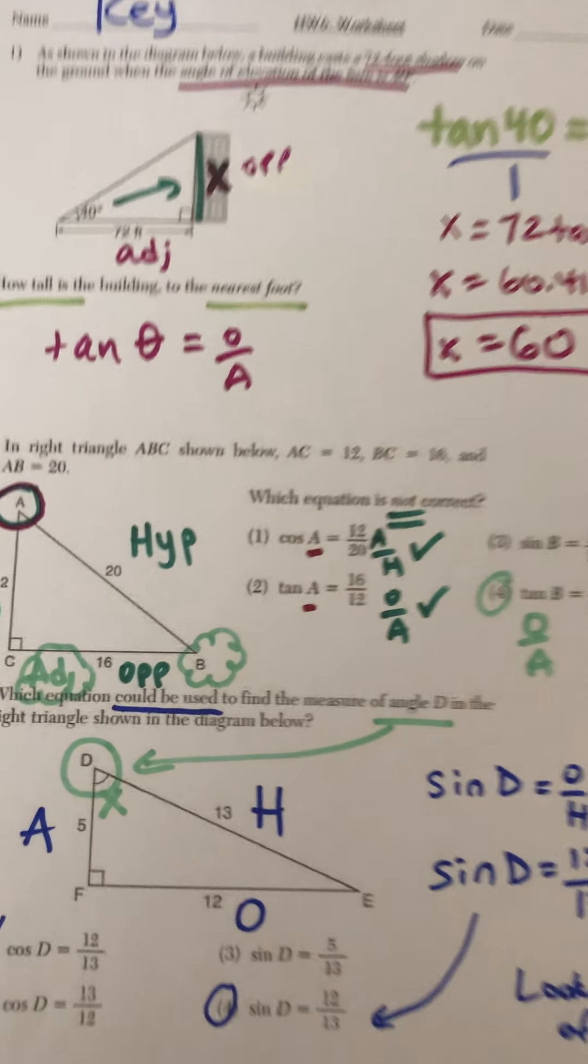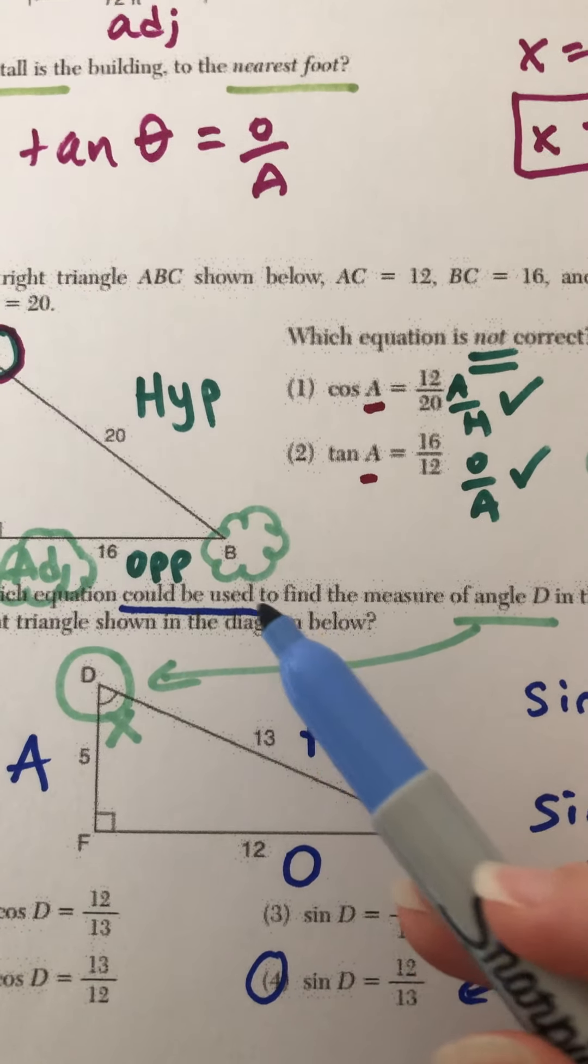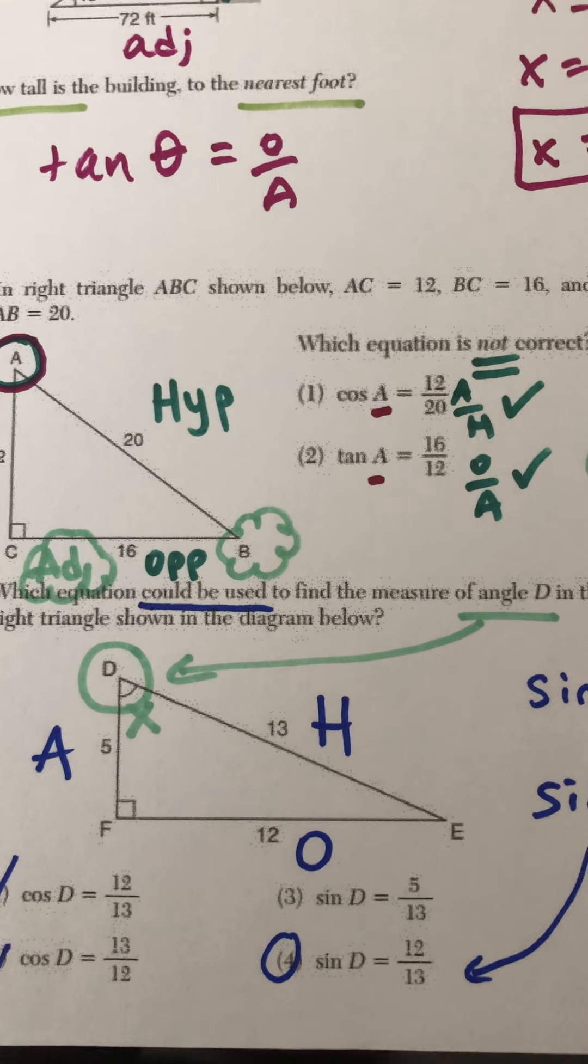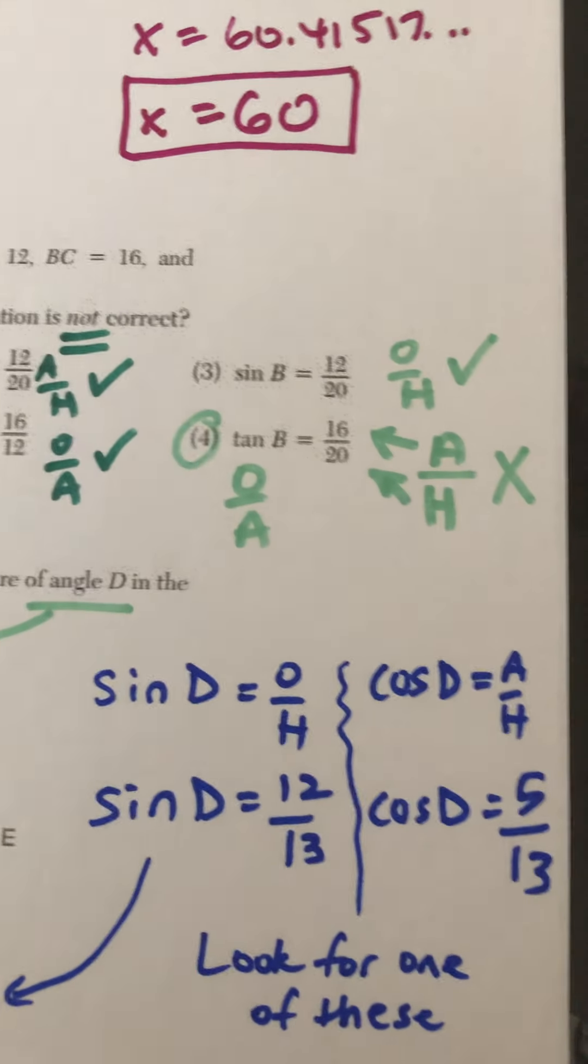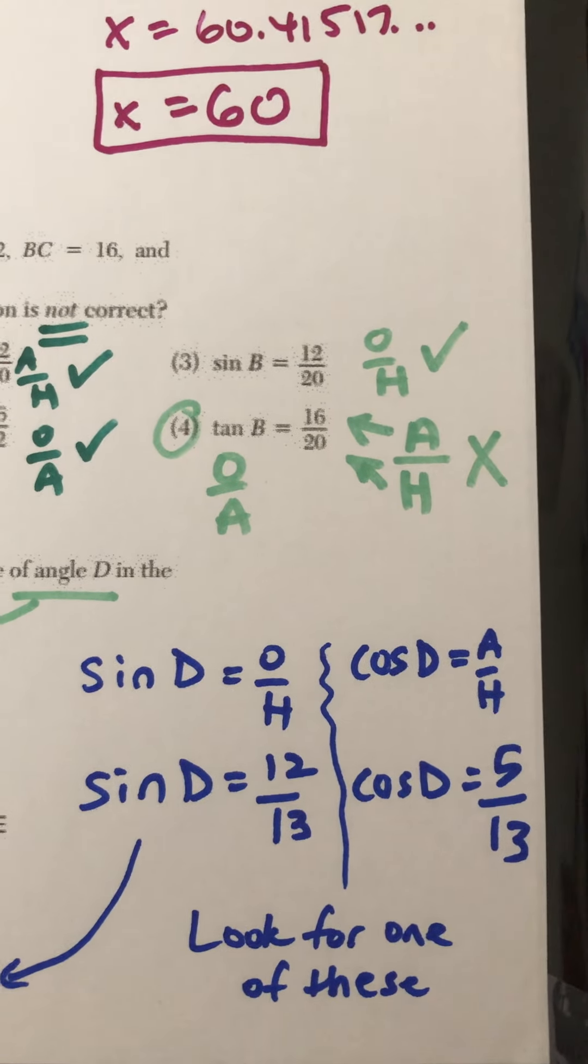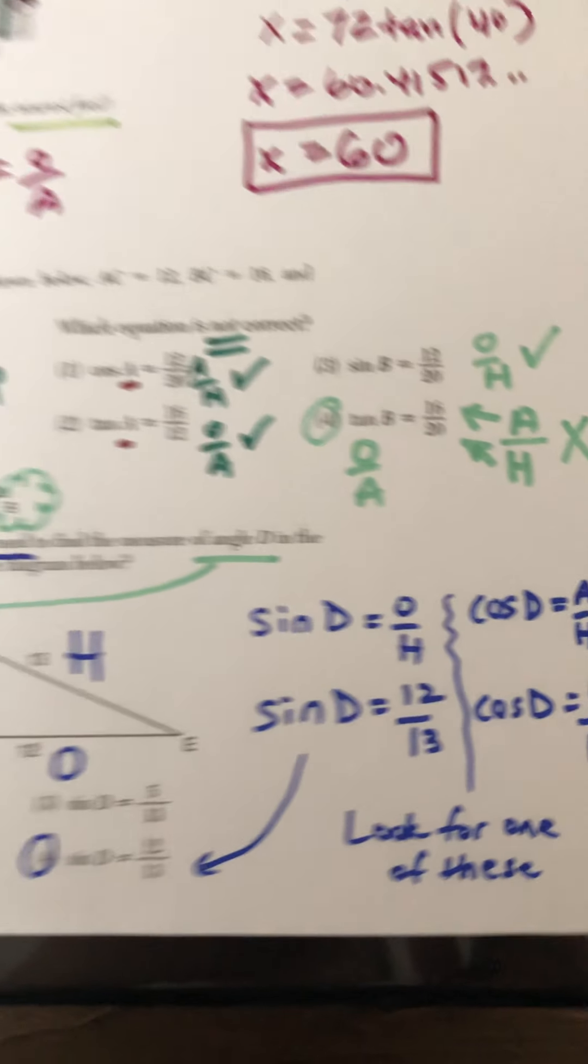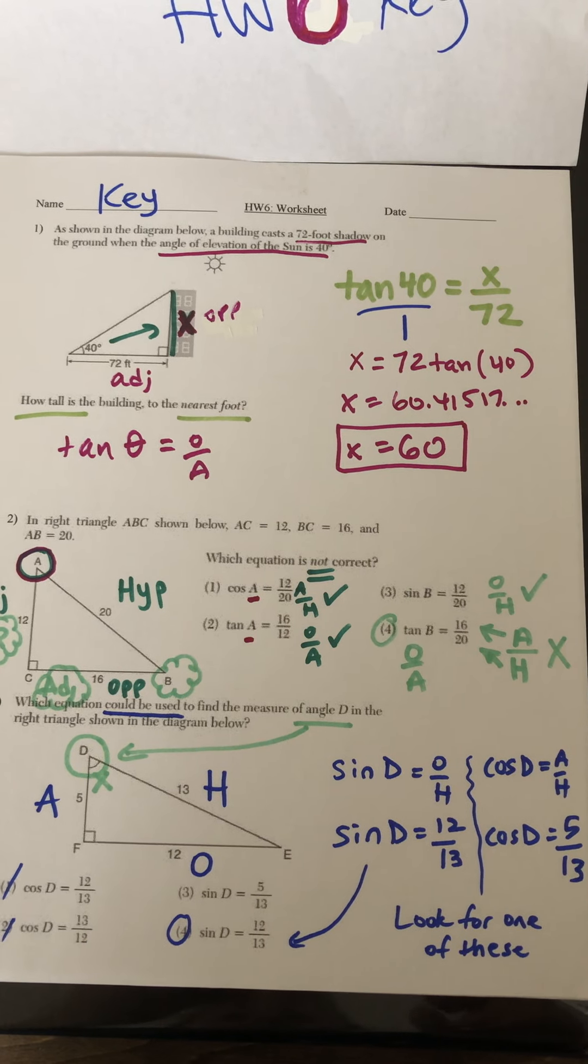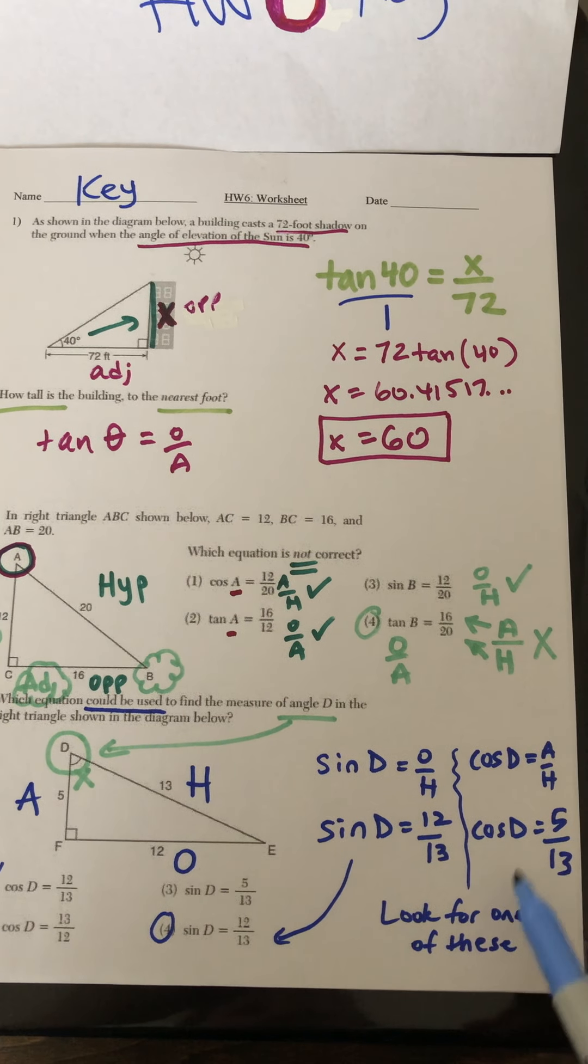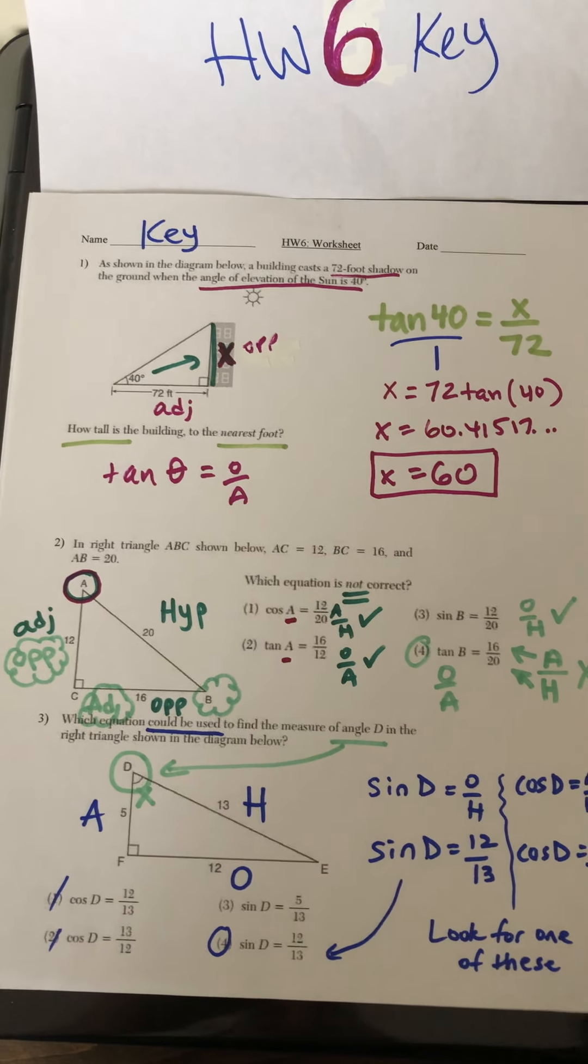Number 3, what I've done is I'm looking for something that could be used, meaning something that could be true, to find angle D. And all the choices are about sine and cosine. So I'm going to write down sine D and put the numbers in the proper place, the same as cosine D, adjacent over hypotenuse. Take a look at where those belong. And you'll see that sine D being 12 over 13 is answer choice 4. This is the only one listed in the multiple choice.